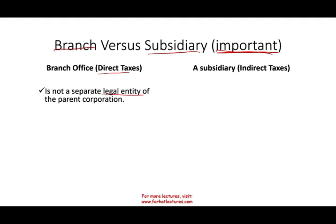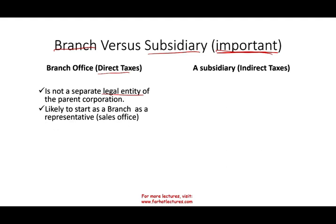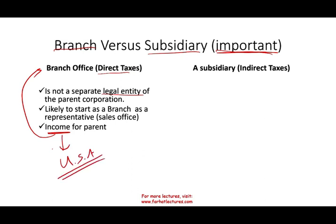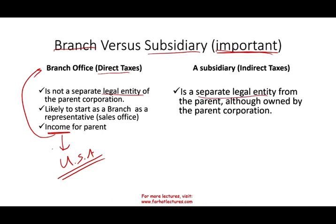Most companies will likely start as a branch when expanding into a territory — first a representative, then an office or branch — and eventually convert to a subsidiary. Any income that a branch earns is treated as income of the parent. If you operate as a subsidiary, however, it is considered a separate legal entity from the parent company. Although owned by the parent, since it's incorporated in the foreign country, it is a subsidiary, and its income is not recognized until repatriated as a dividend.